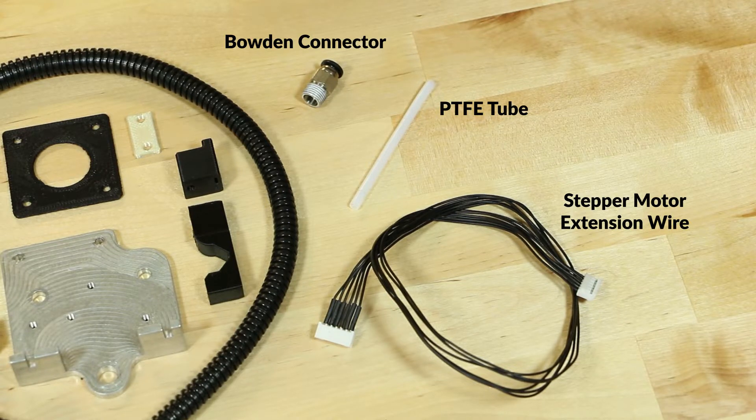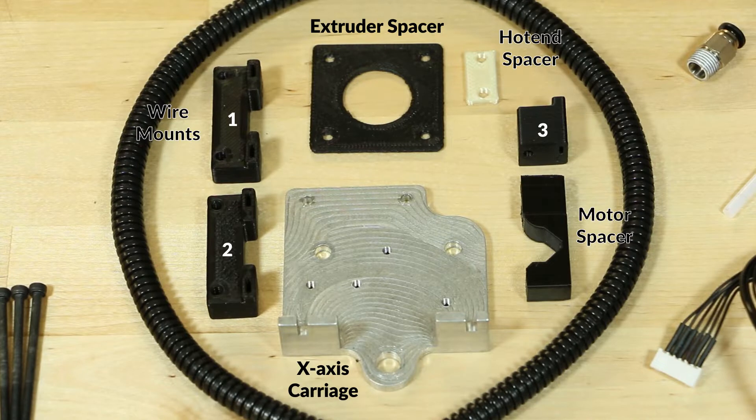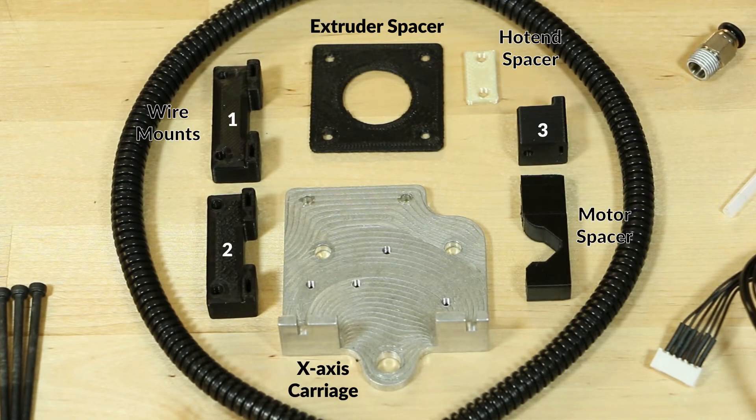Here we have a bowden connector, a PTFE tube, and an extension wire. Here we have the X carriage, extruder spacer, the hot end spacer, and some wire mounts.